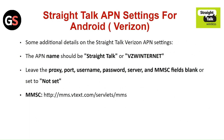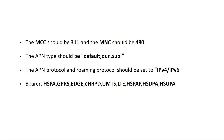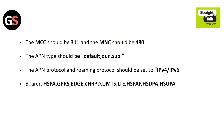Straight Talk APN settings for Android. The APN name should be 'straight talk'. Leave the proxy, port, username, password, server, and MMSC fields blank and set to 'not set'. The MCC should be 311 and the MNC should be 480. The APN type should be default. The APN protocol and roaming protocol should be set to IPv4 and IPv6.